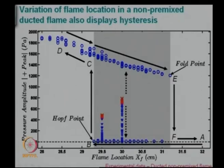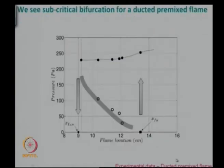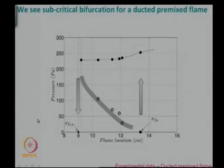The flame becomes unstable at a particular position of the burner. To come back, you cannot just come back right there and become stable — you have to go a little further to make it stable. This is in a diffusion flame and this is a premixed flame. Again you have to come to a certain point to go unstable, but you have to go back at another place to become stable. There is a lot of hysteresis to be seen in any kind of experiment.